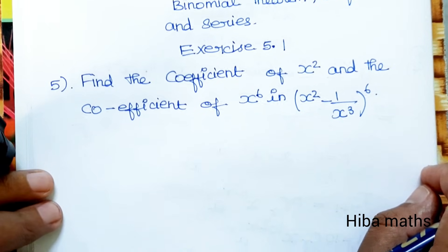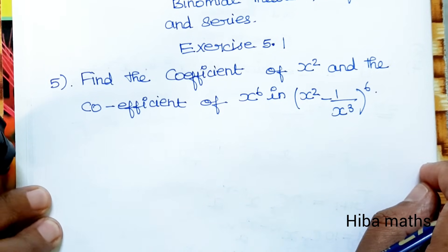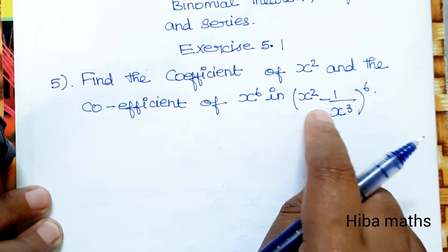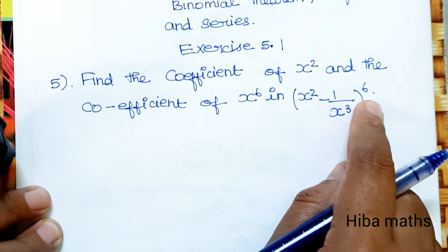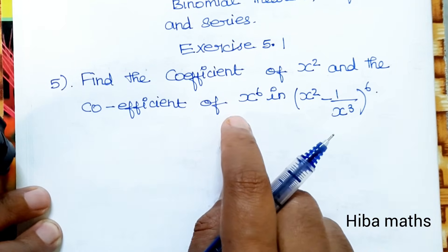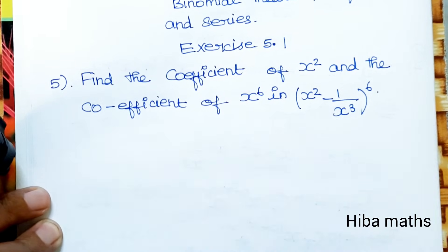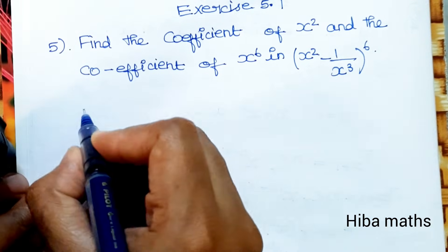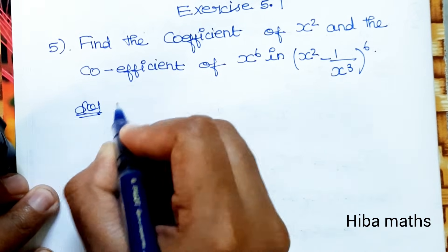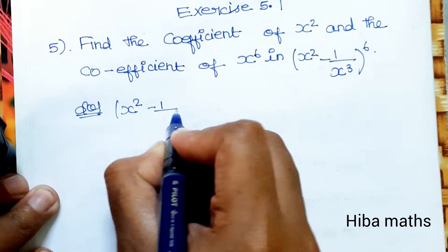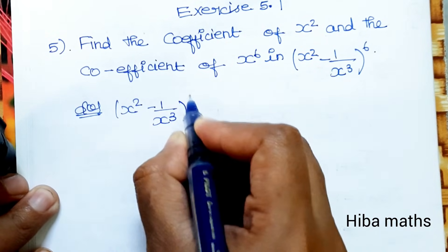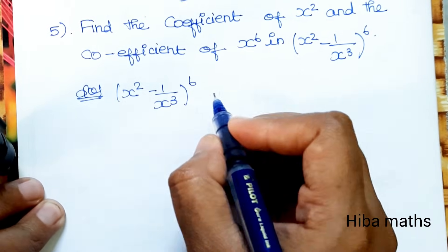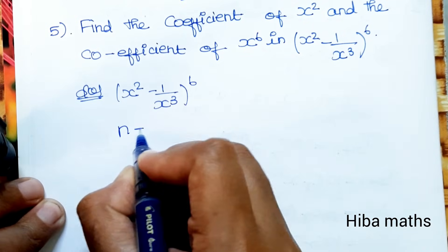In order to find the coefficient of x squared and the coefficient of x power 6 in (x² - 1/x³)^6. This is the last sum, and we will find it using the same method. The given values are: n = 6, x = x², a = -1/x³.